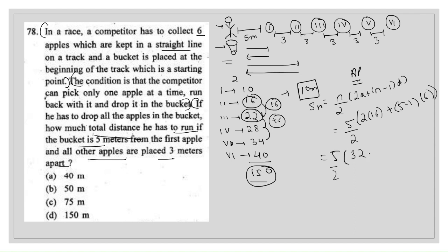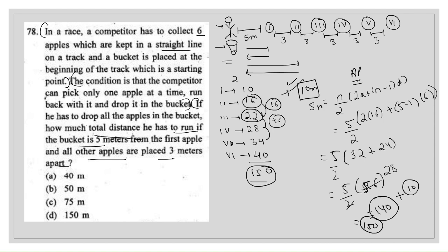Simplifying: 5/2 × 56 = 5 × 28 = 140. Then adding the first apple's distance of 10 meters: 140 + 10 = 150 meters. So the answer is 150 meters. This AP method is particularly useful when there are many apples — say 30 or 40 — where direct addition would be tedious.